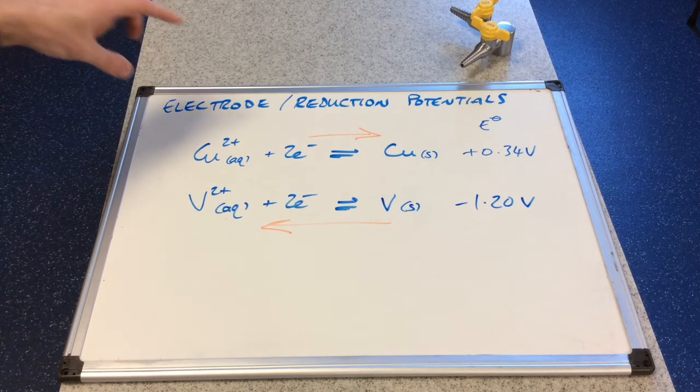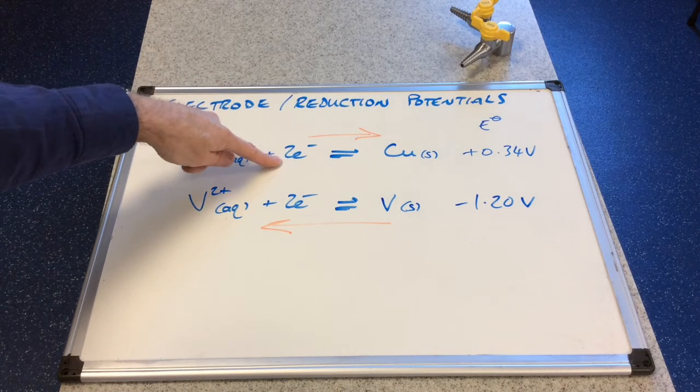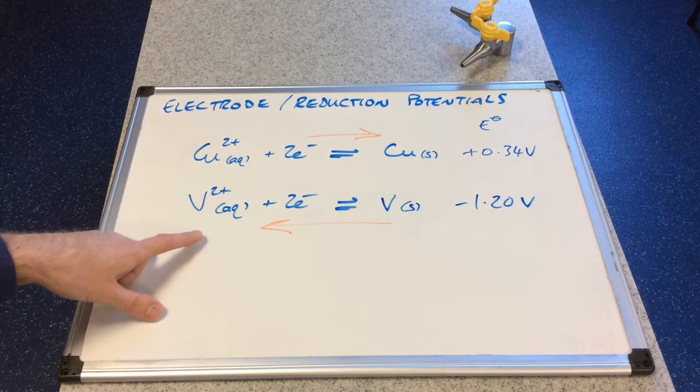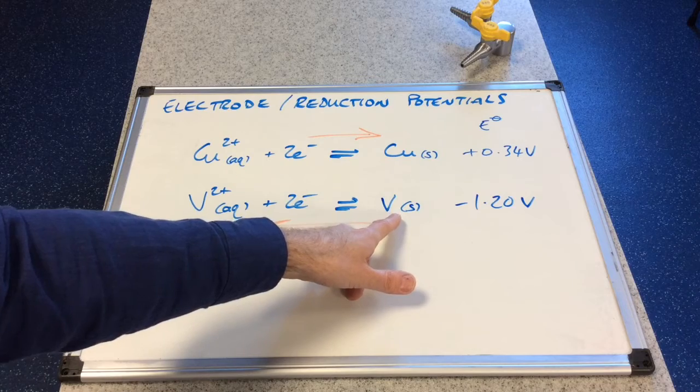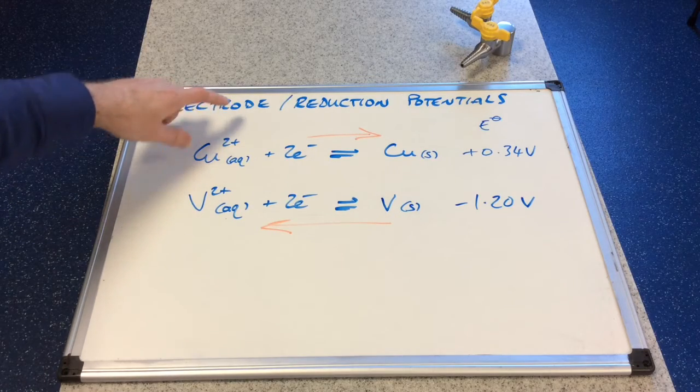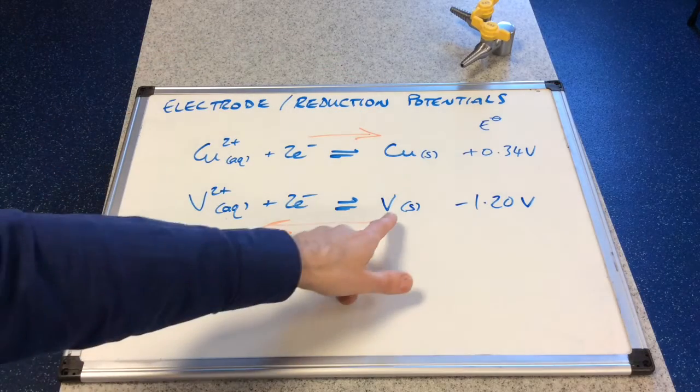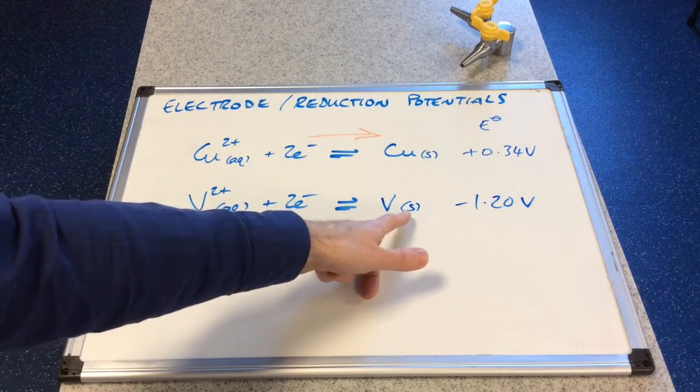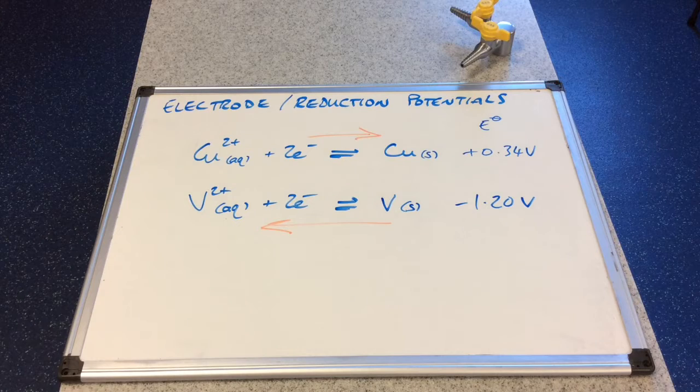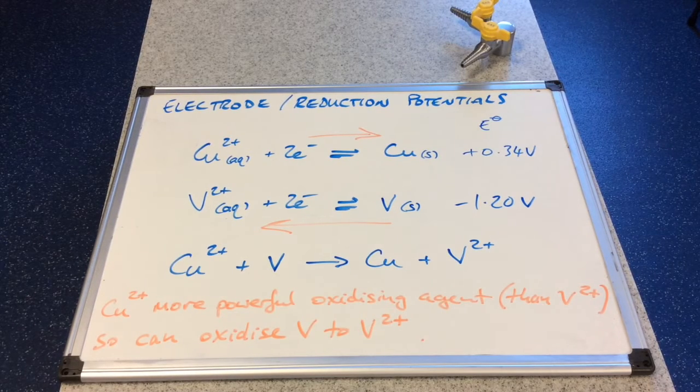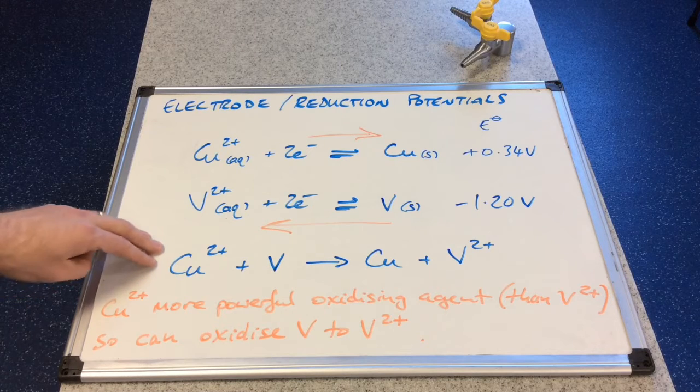So in other words, what's going to happen is the copper two plus ions are going to take two electrons from, well what can I take electrons from in this half cell or half equation, it's the vanadium. So copper two plus ions will gain electrons and turn into copper. And to make that happen, the V solid, the atom, has to lose two electrons. So it will become V2 plus. So by using the standard electrode potentials we can generate the reaction that will take place when you combine two half cells, half equations together.